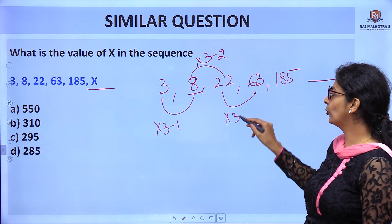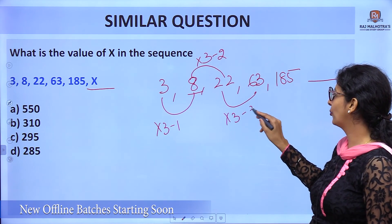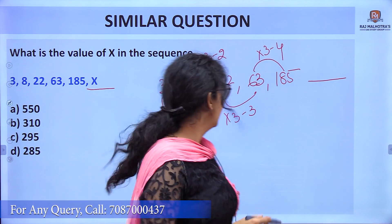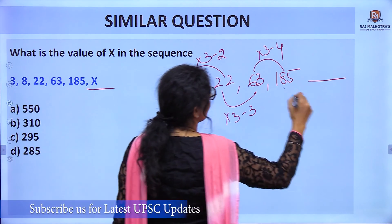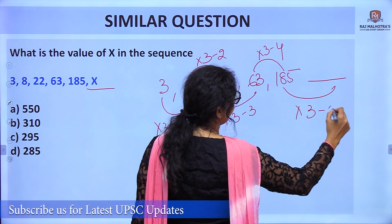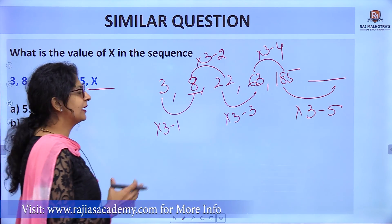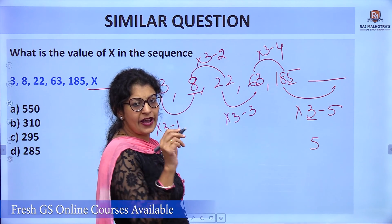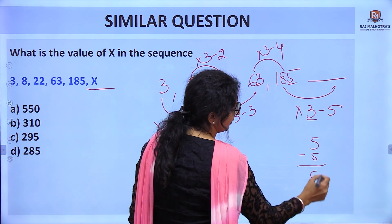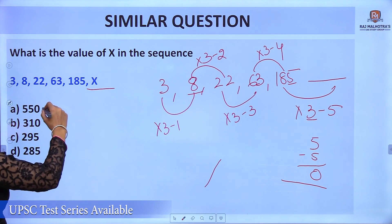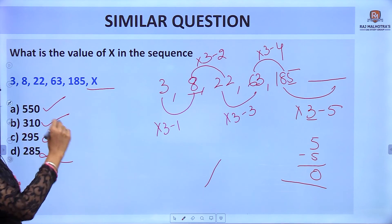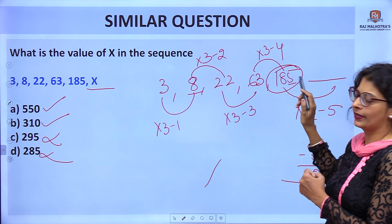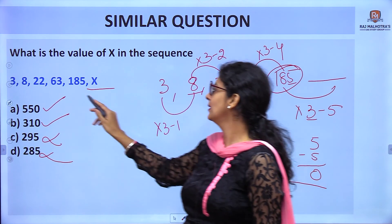Next: 22 × 3 = 66, minus 3 = 63. Then 63 × 3 = 189, minus 4 = 185. So the next one is ×3 minus 5. The last digit calculation shows it ends in 0, so the answer is A or B. C and D are eliminated. Since 185 is around 200, and 200 × 3 = 600, the answer is 550.